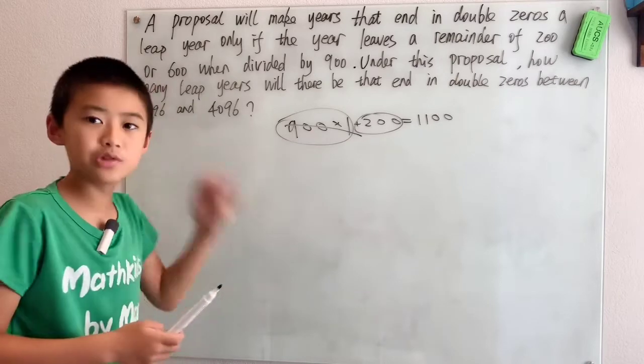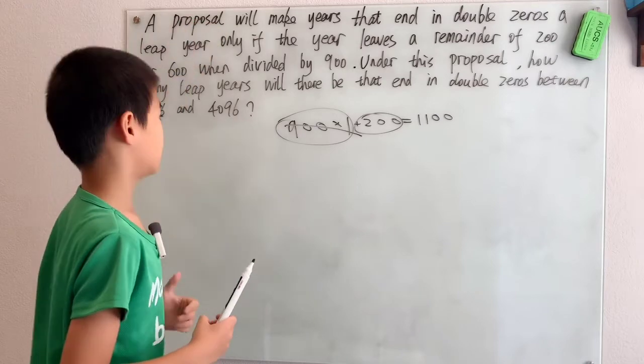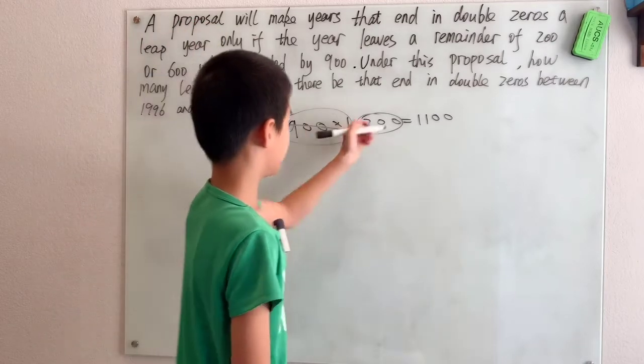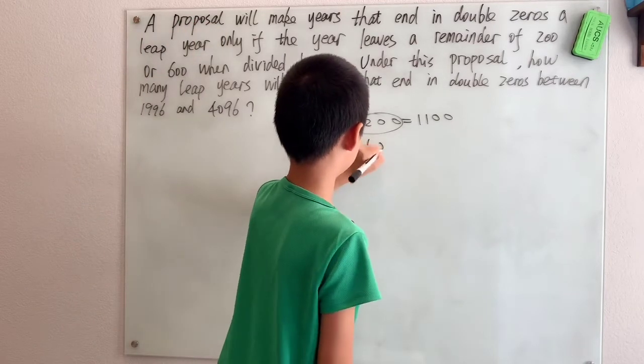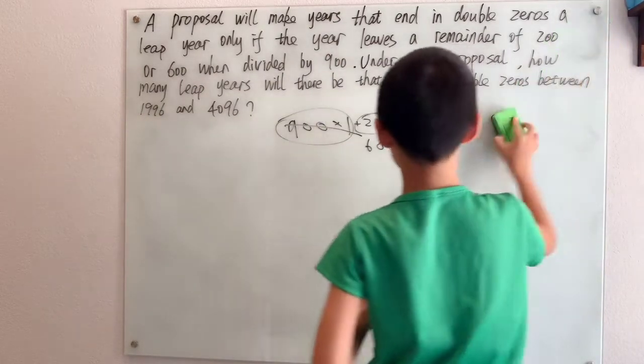Each multiple can give us one or two different possibilities for leap years because you can exchange the 200 for the 600 and get 900 plus 600, a totally different number or leap year.